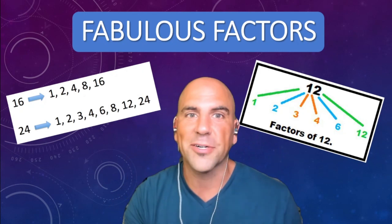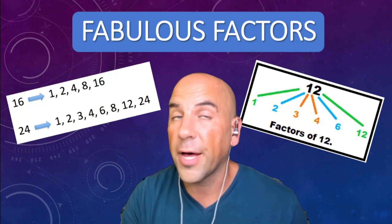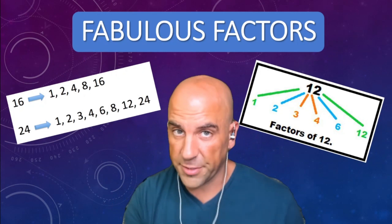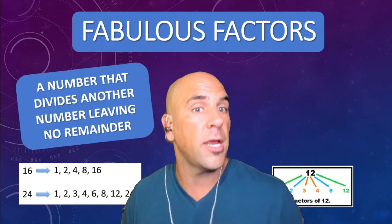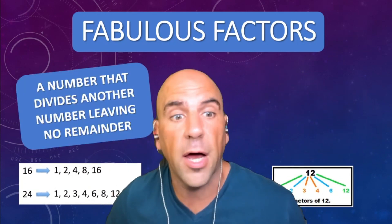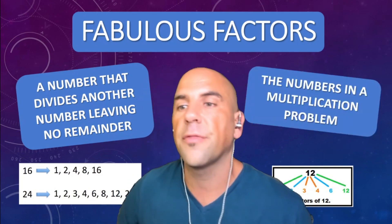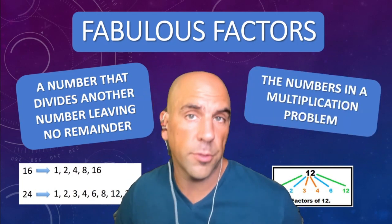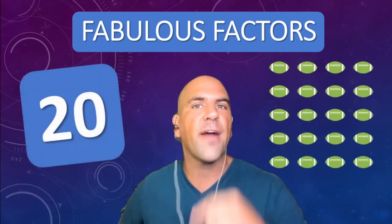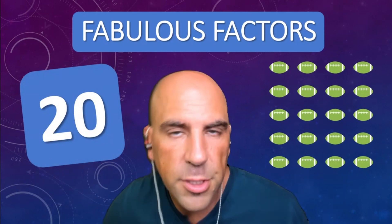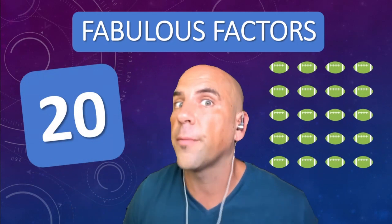Fabulous, fabulous factors, everyone! Let's figure out how to find these fabulous factors. A factor is a number that divides another number leaving no remainder, or you can say the numbers in a multiplication problem. All right, let's find factors of 20. What two numbers can multiply together to make 20? Let's find them all.